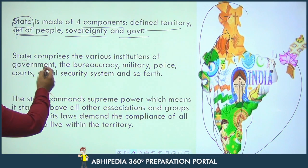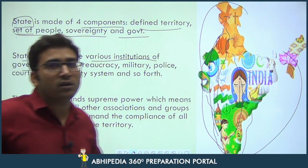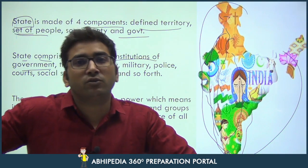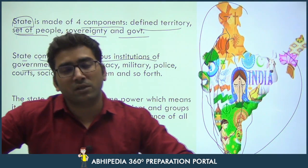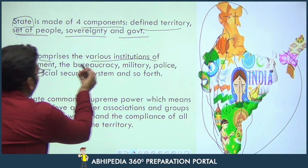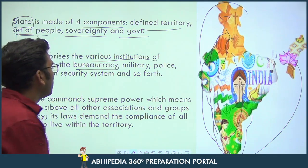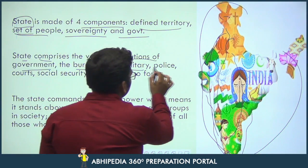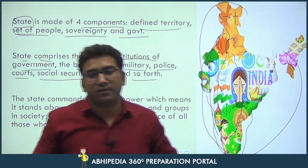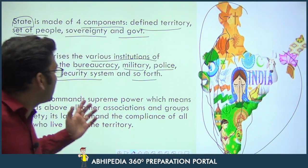State comprises various institutions of government. Government is not a term we use only for the executive part. The state has government bureaucracy whose task is to implement decisions, as well as the military, police, courts, social security systems, and so forth. All these institutions are the components or the integral part of our state, which is India.